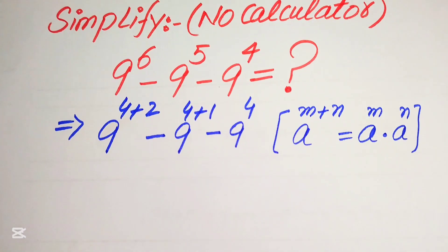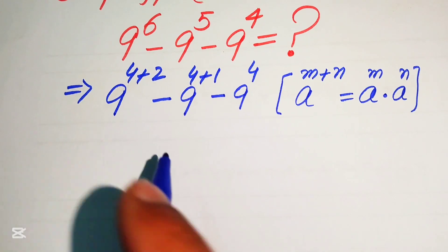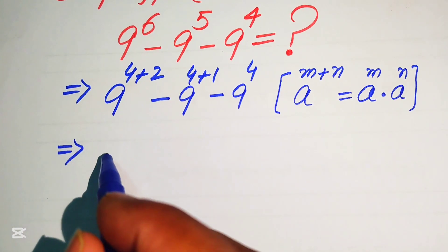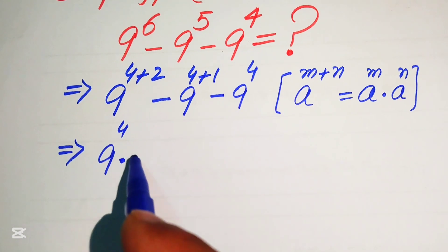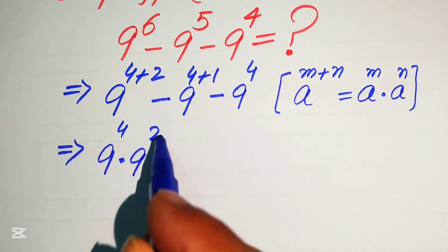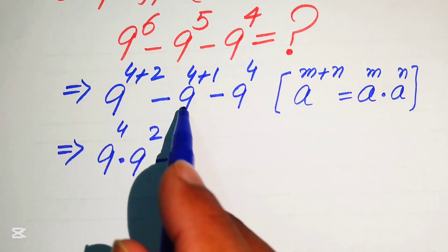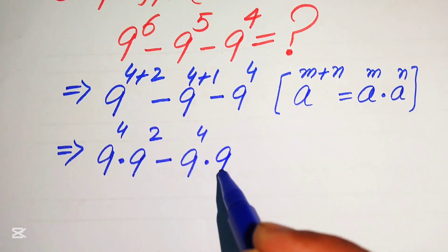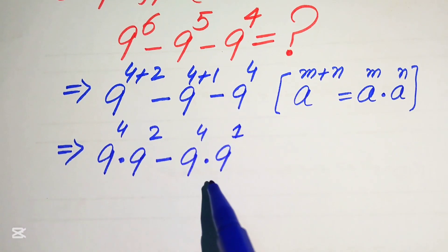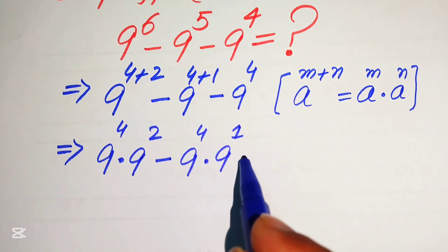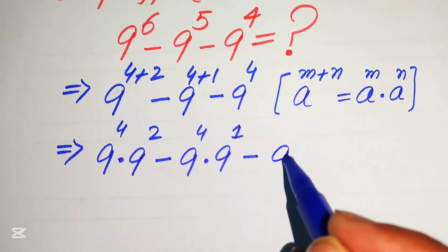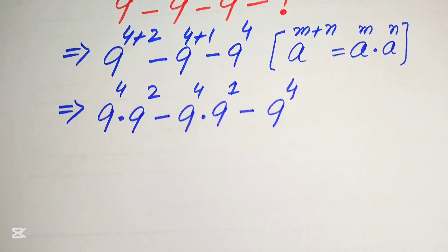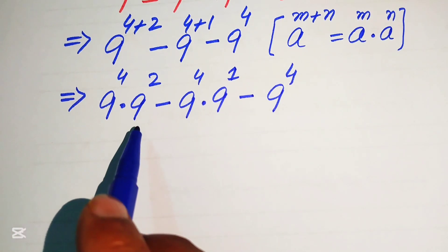According to this exponent law, we rewrite the expression: 9 to the power of 4 plus 2 becomes 9 to the power of 4 multiplied by 9 to the power of 2, minus 9 to the power of 4 plus 1 written as 9 to the power of 4 multiplied by 9 to the power of 1, and minus 9 to the power of 4.